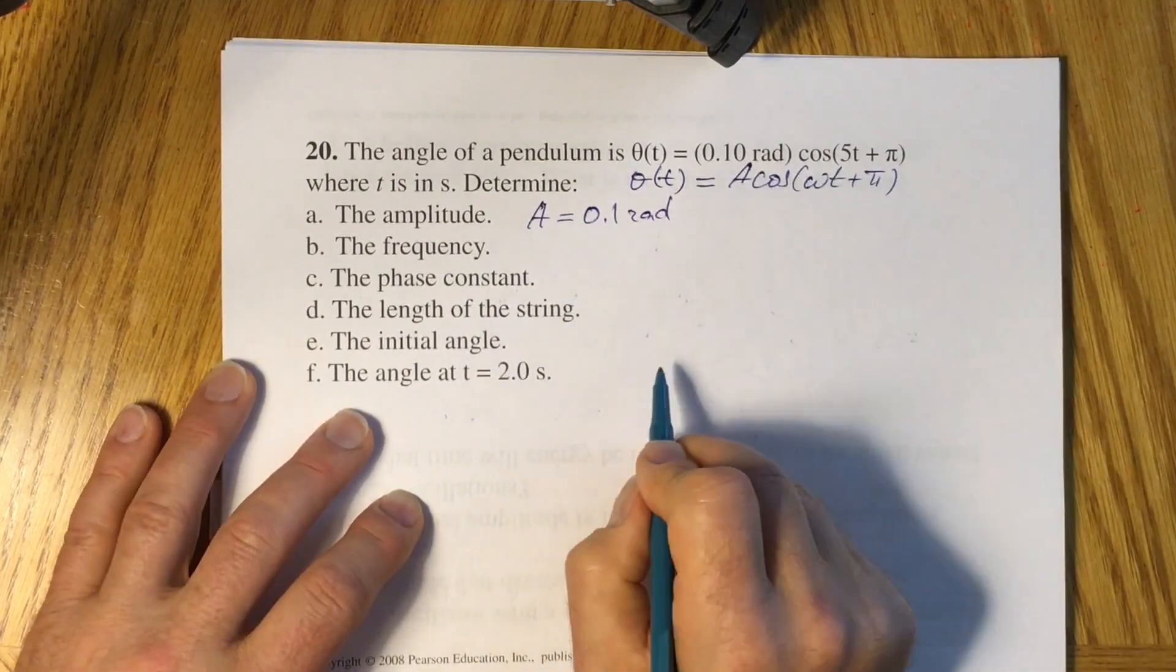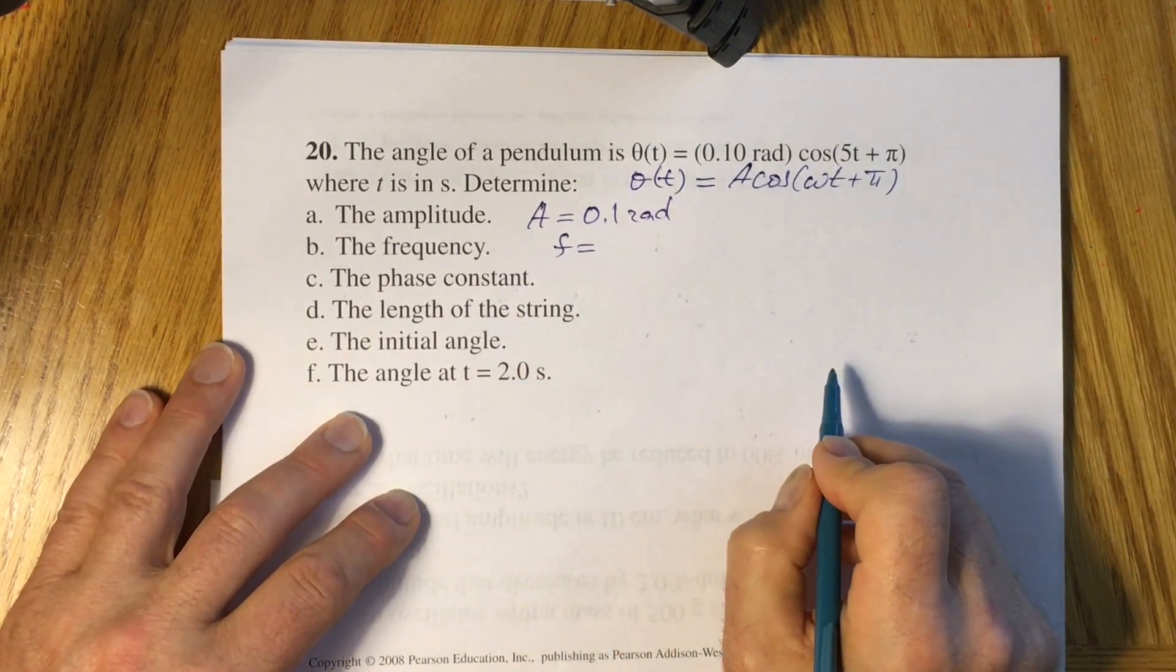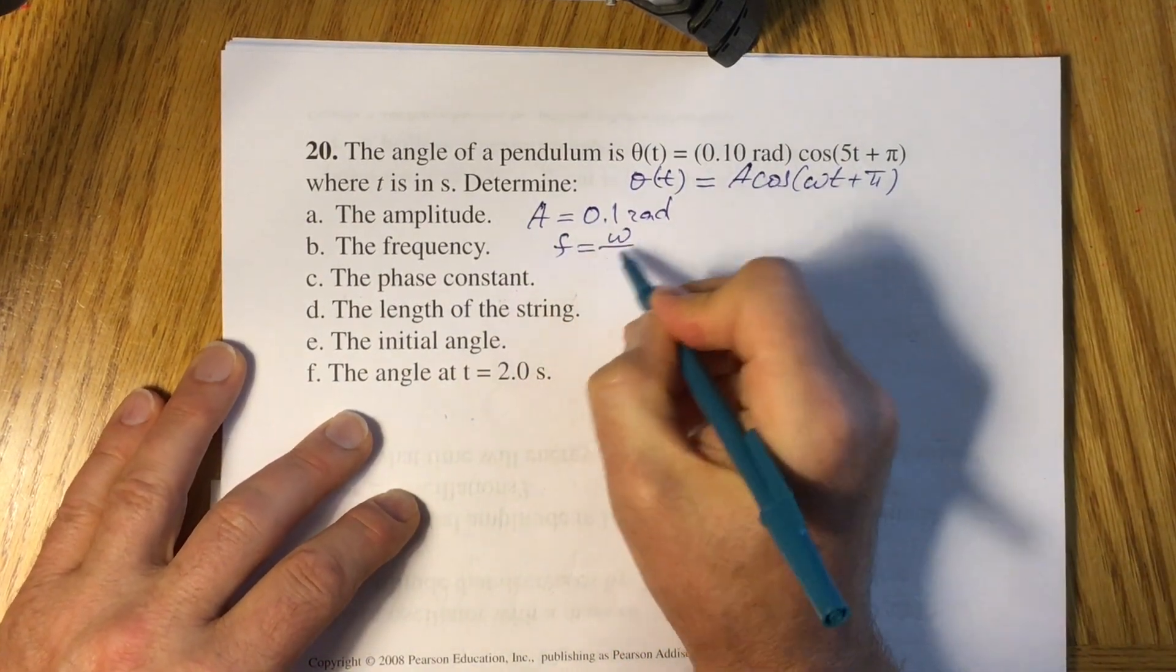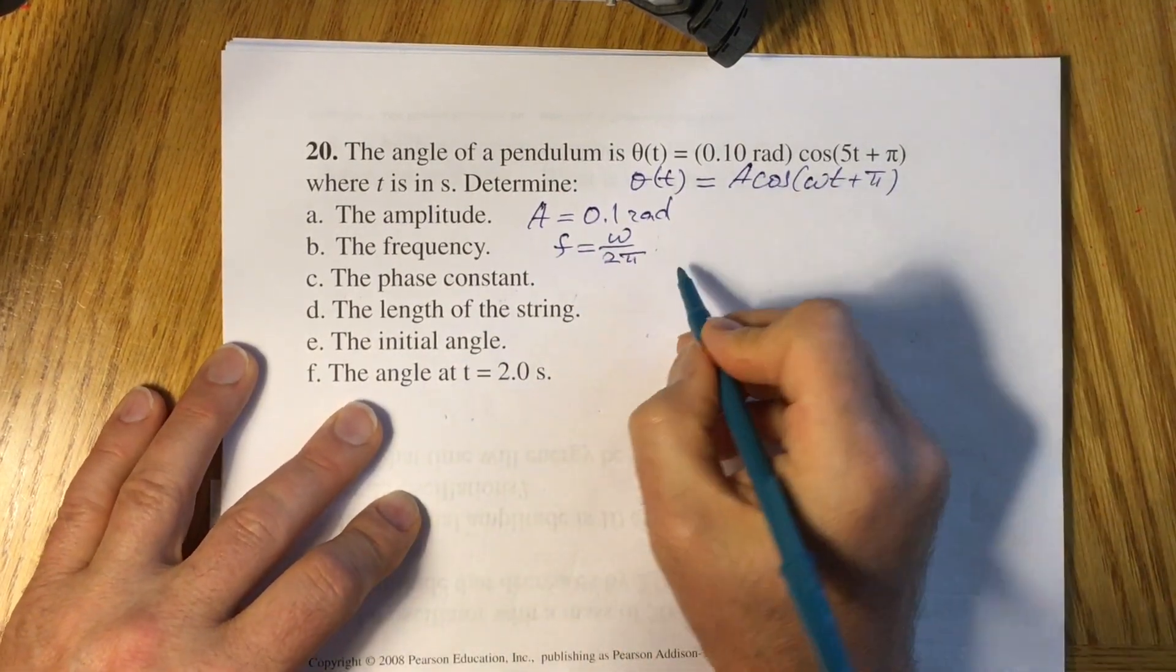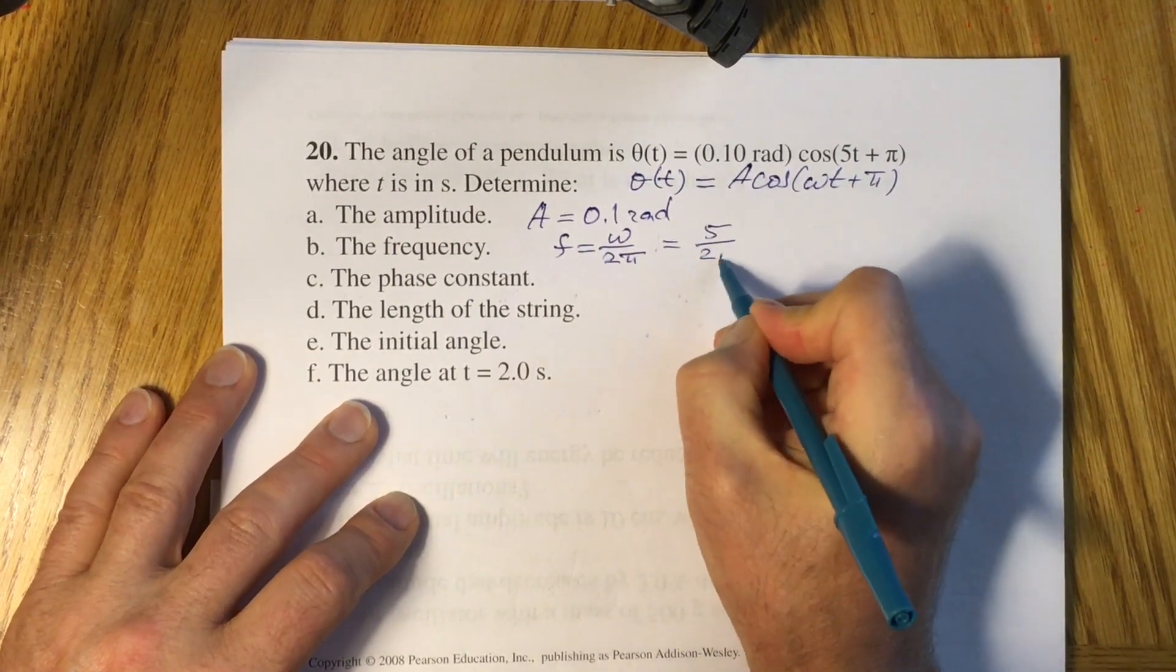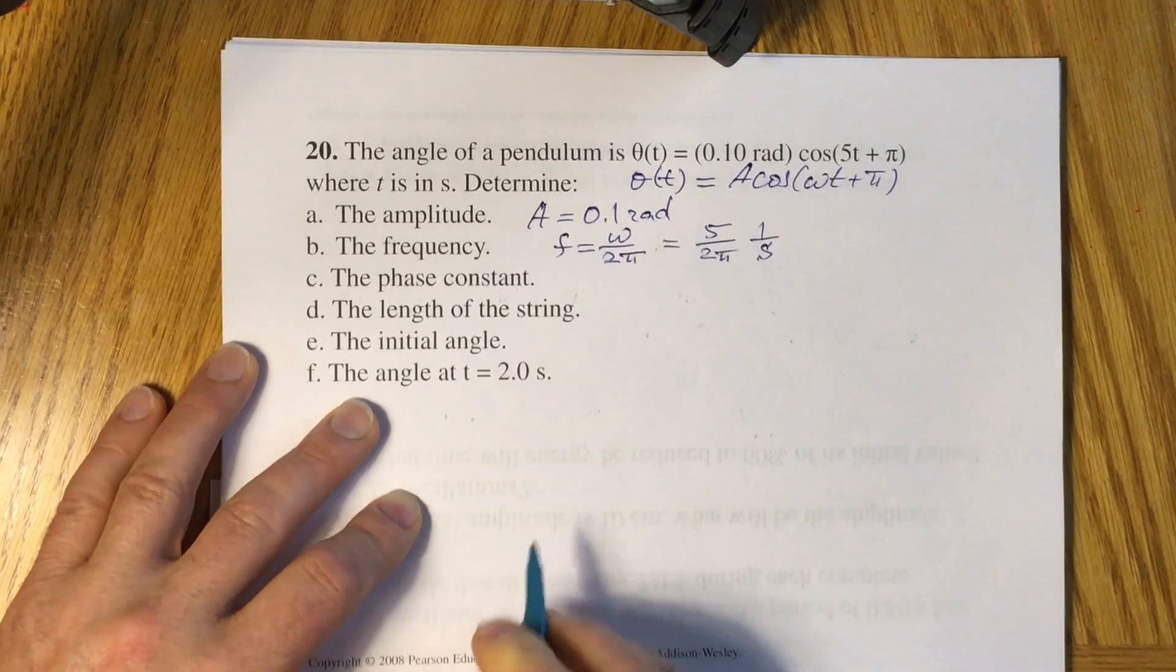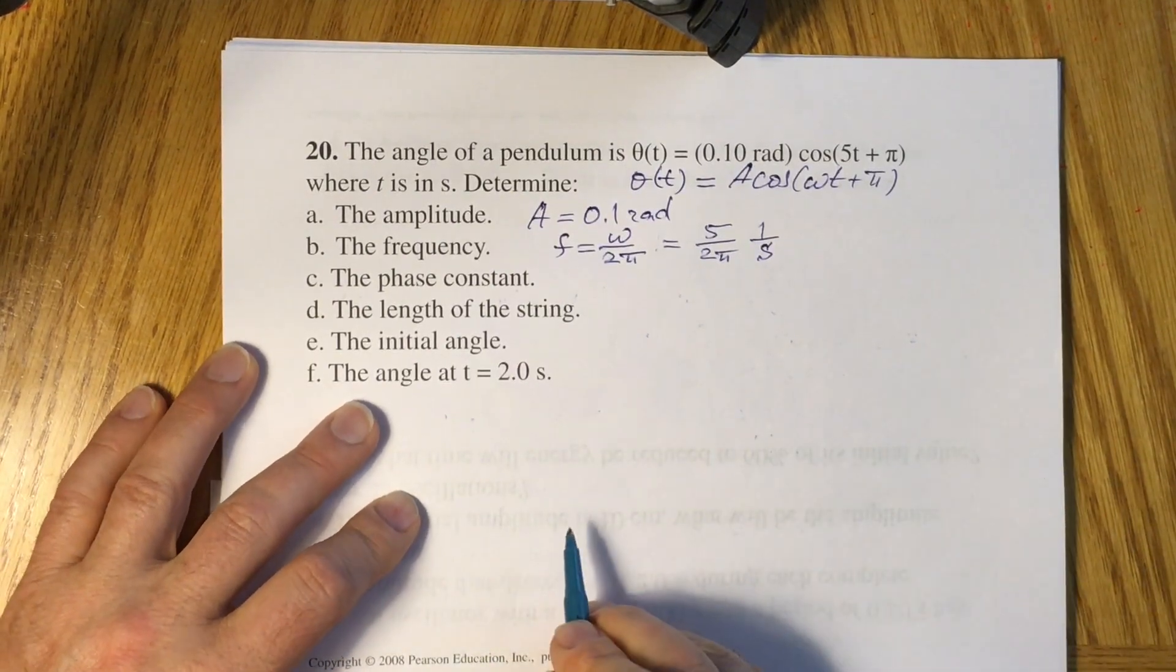Now second question. You need to find f. You know that your f is connected to the omega as omega divided by 2 pi. You are given your omega, it's 5, 1 over second. So you will have 5 over 2 pi, 1 over second. And you did solve that for the frequency.